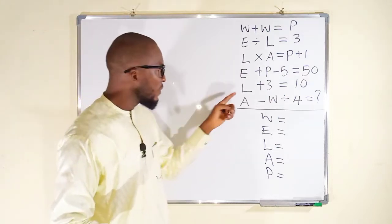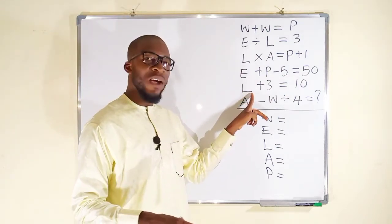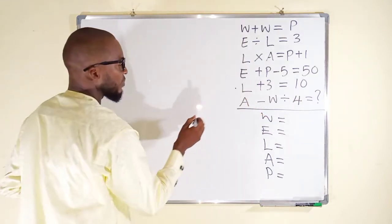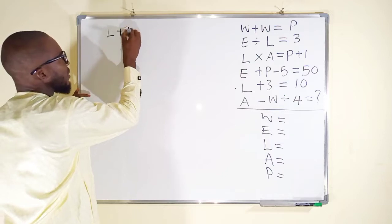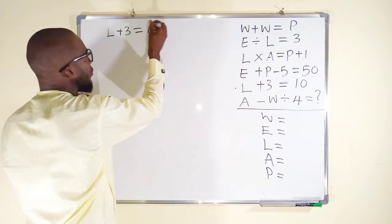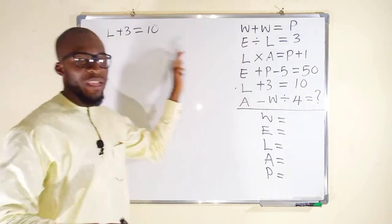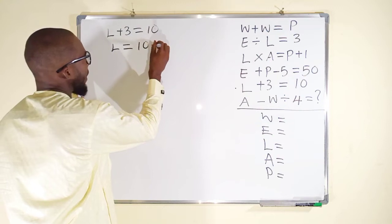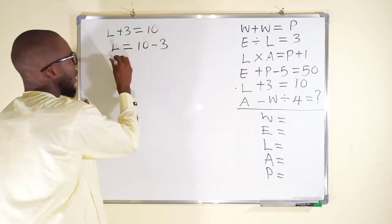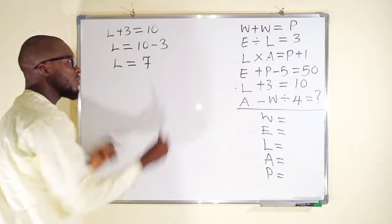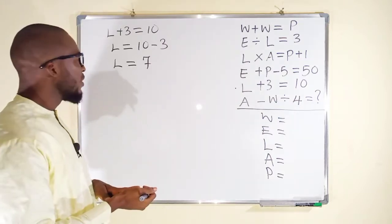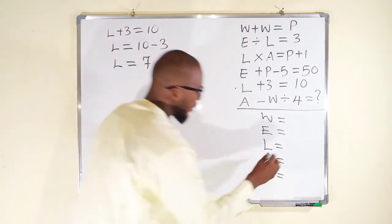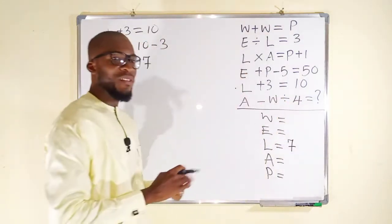For convenience, let us start with this equation right here. You can see we only have a single variable here, which is L. So from this equation here, L plus 3 is equal to 10. What does this mean? If we take 3 to the right, it becomes negative. So we have L equal to 10 minus 3. And L is equal to 7 because 10 minus 3 is 7. So each slice of lemon represents 7. So we can bring it here. We have 7.